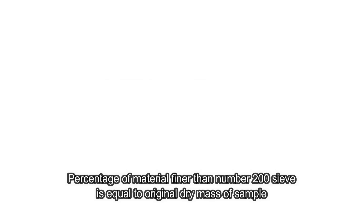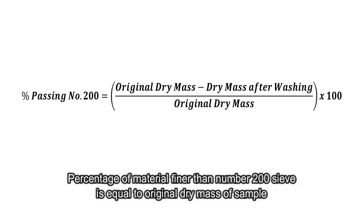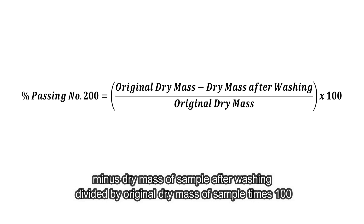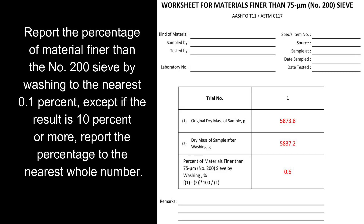Calculation: percentage of material finer than the number 200 sieve equals original dry mass of sample minus dry mass of sample after washing, divided by original dry mass of sample, times 100. Report the percentage of material finer than the number 200 sieve by washing to the nearest 0.1%, except if the result is 10% or more, report the percentage to the nearest whole number.